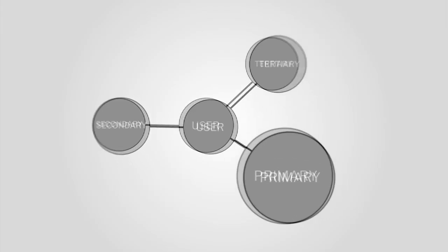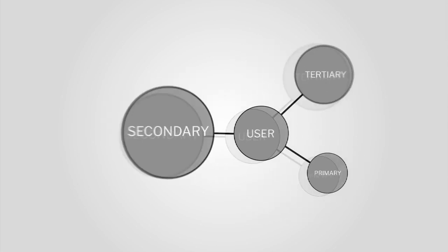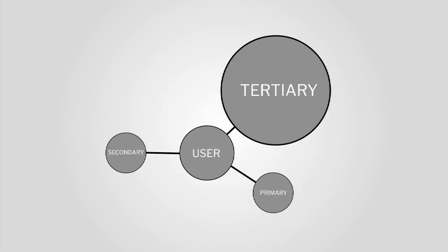There are at least three types of users: the primary user, the secondary user, and the tertiary user.